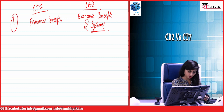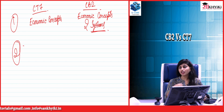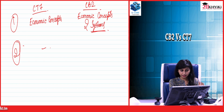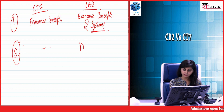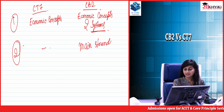The second part is the Main Strands of Economic Thinking, which was completely absent and not talked about in CT7. In CB2 you have this as an entirely additional chapter.